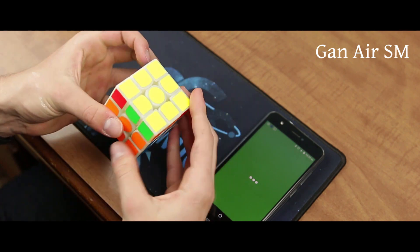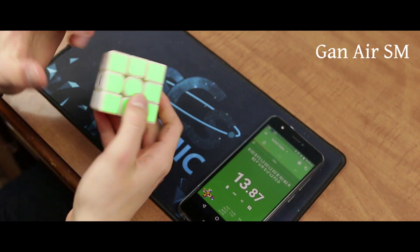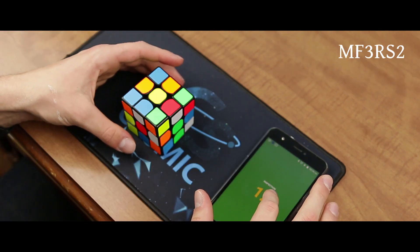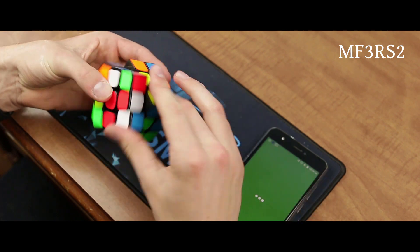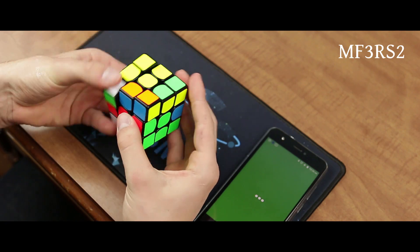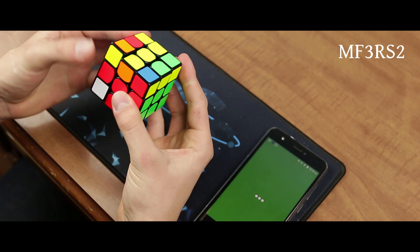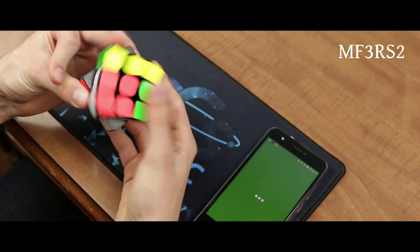For the performance you're getting, the MF3RS2 just kills the Air SM. Sure the Air SM is a top performer, you expect that for $50, but at less than a fifth the price, the MF3RS2's performance is nearly identical to the Air SM. Sure the SM wins if you want a lighter, quieter, or more stable magnetic cube, but in almost every other way, be it smoothness, corner cutting, or corner twisting, the Air SM is just as good.